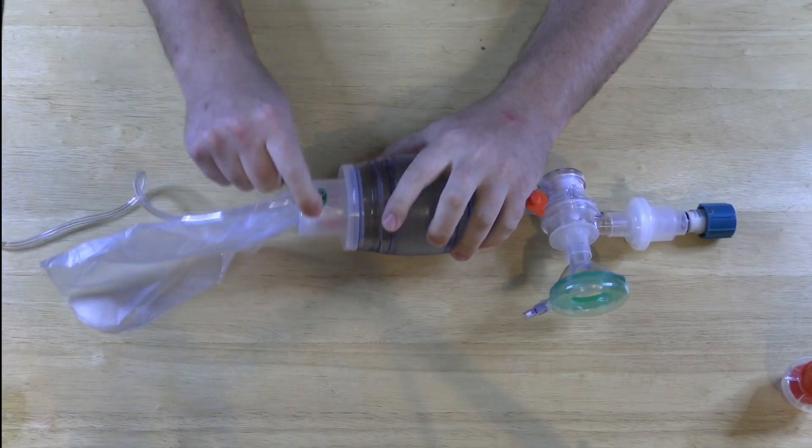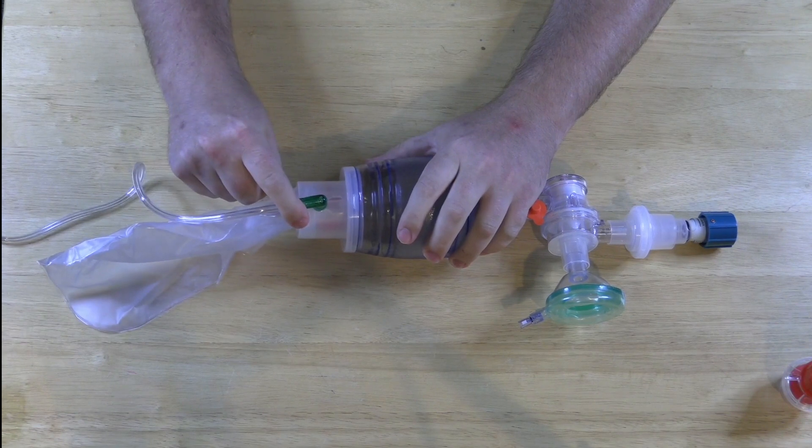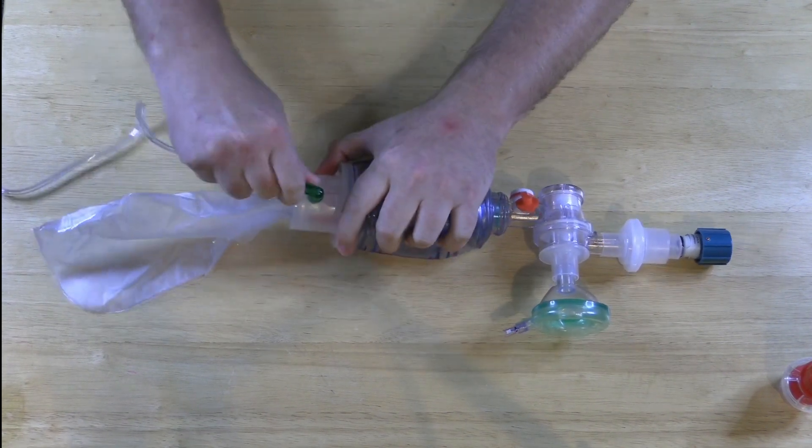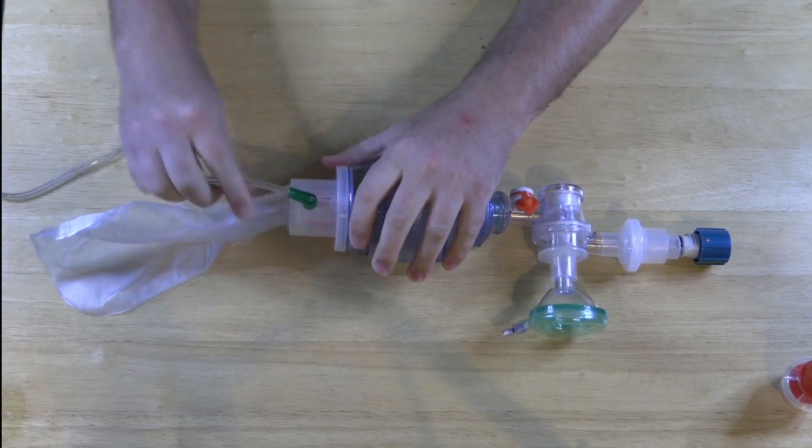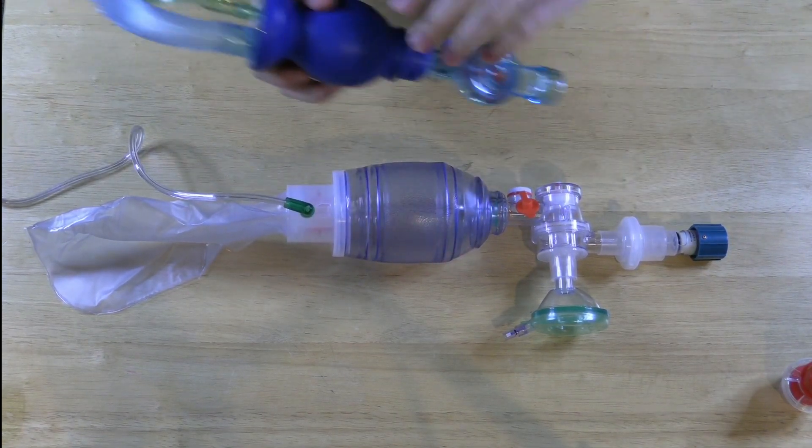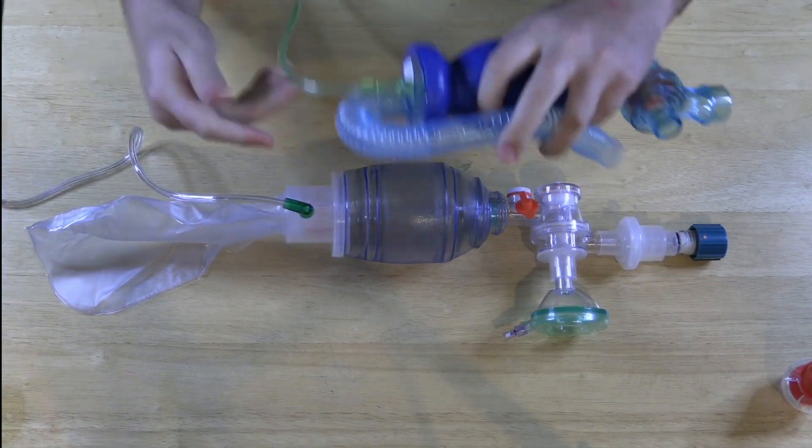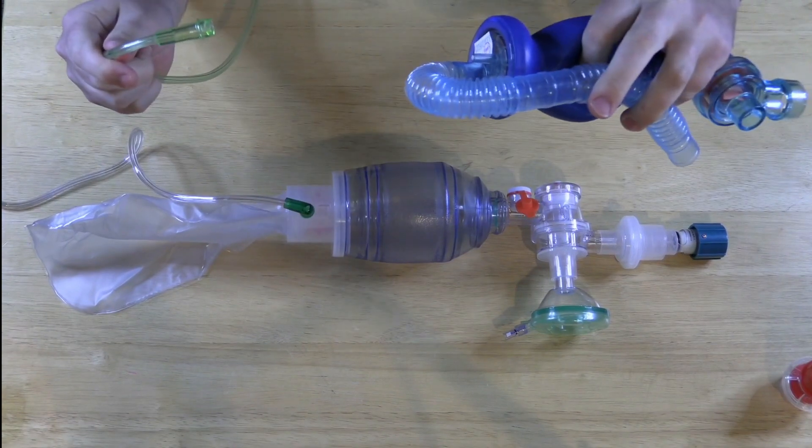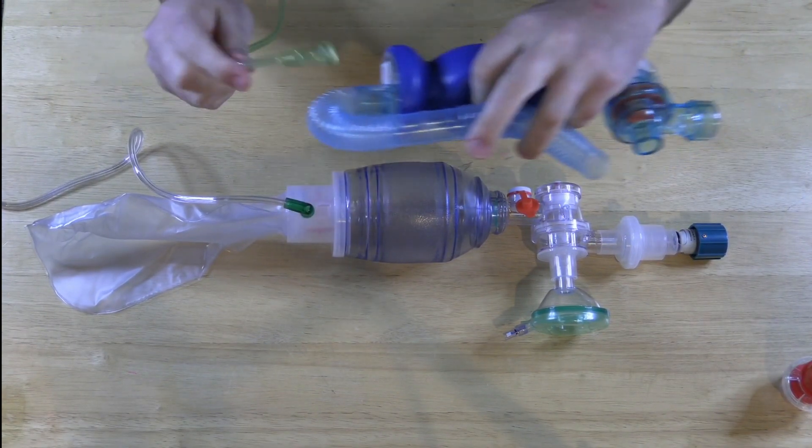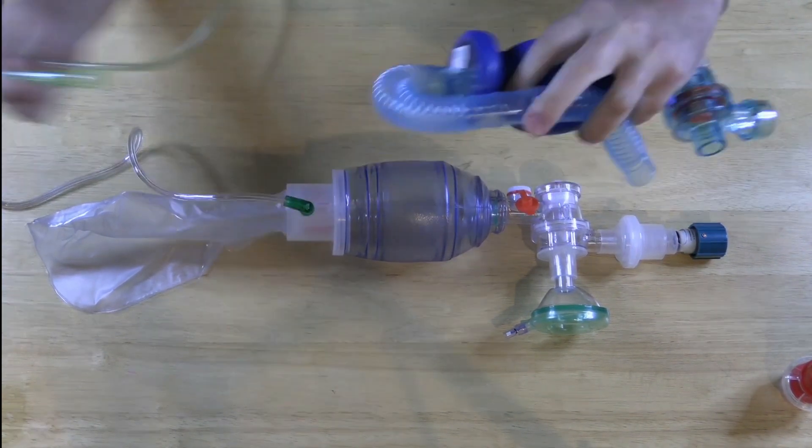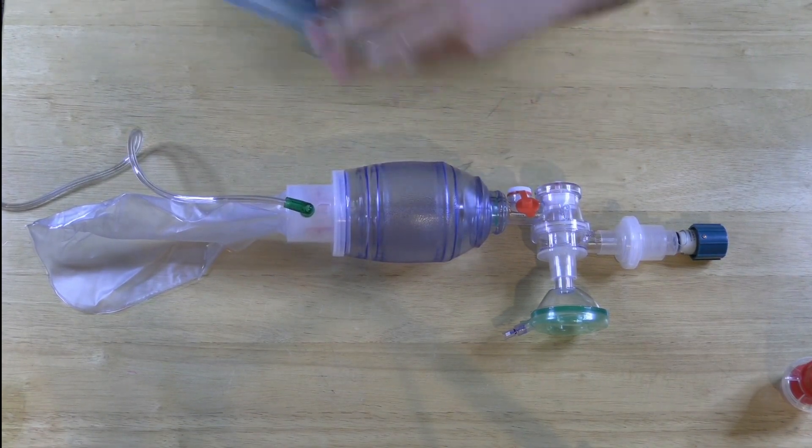This is where the oxygen connects to the BVM. You cannot pull this off and so many times when you're bagging and everybody's running around the recess room or in the ambulance this gets pulled off because you got a tight area and you got to keep putting it back on. You can't do that with this one. This one actually screws on.